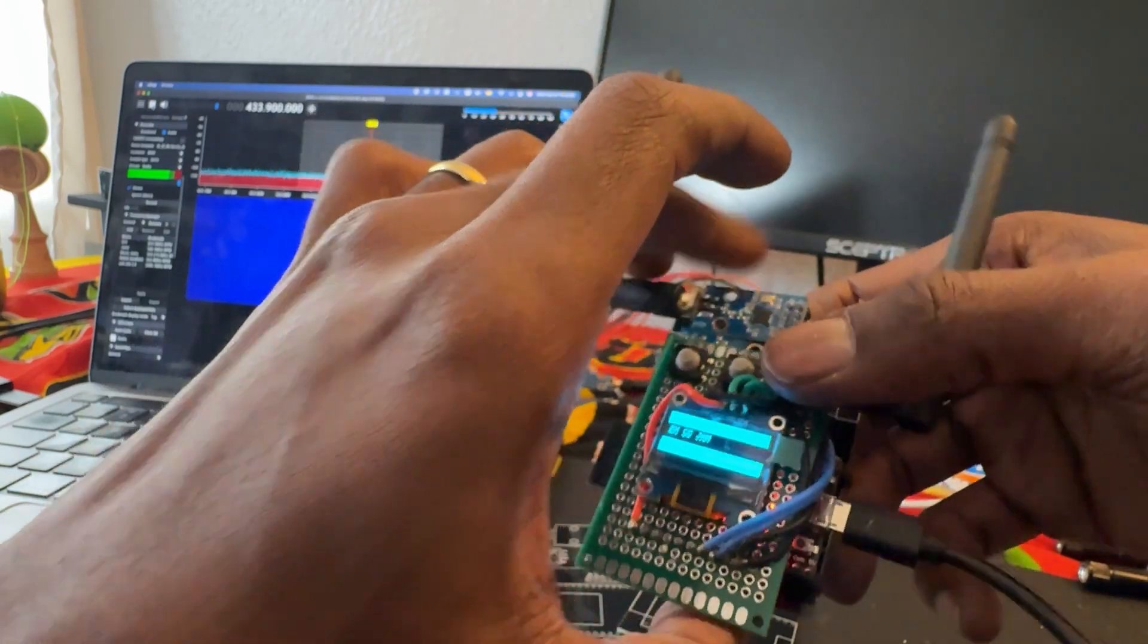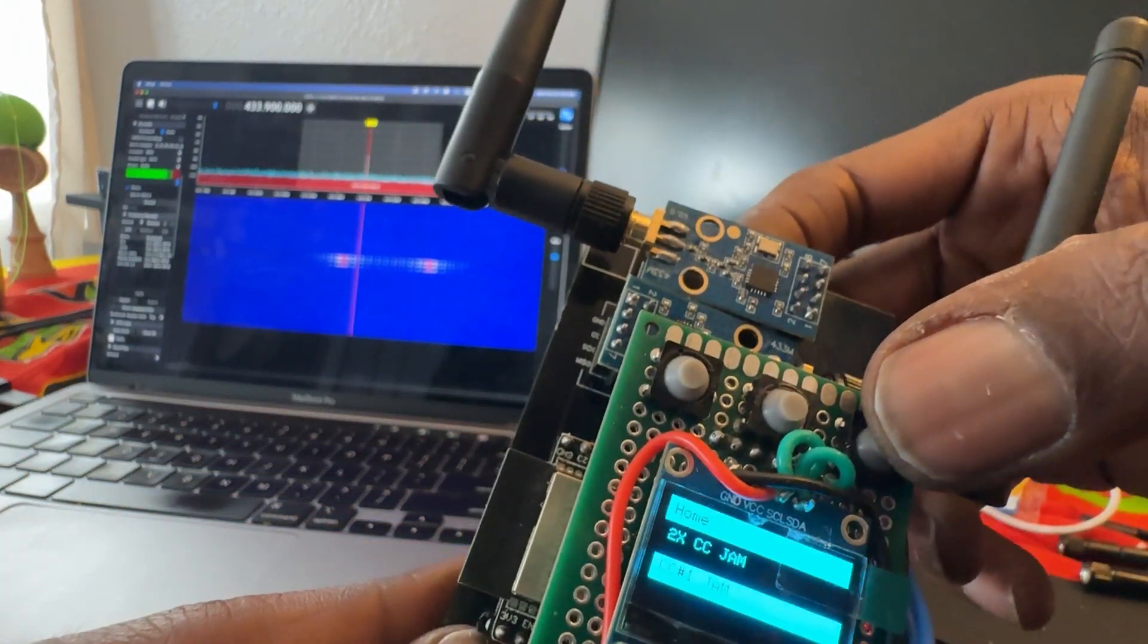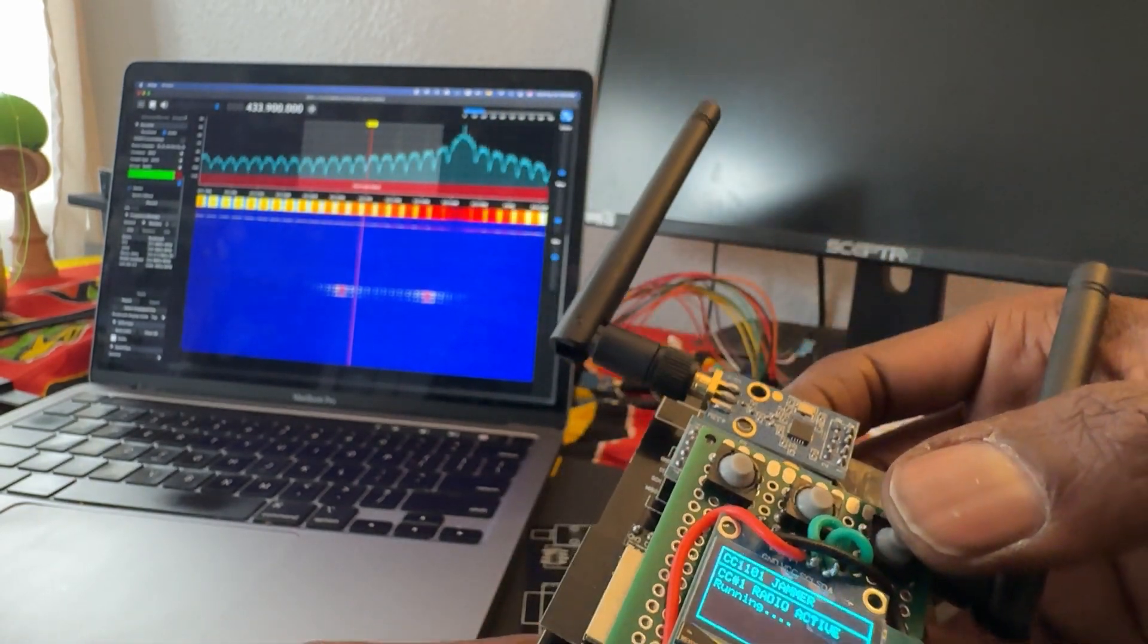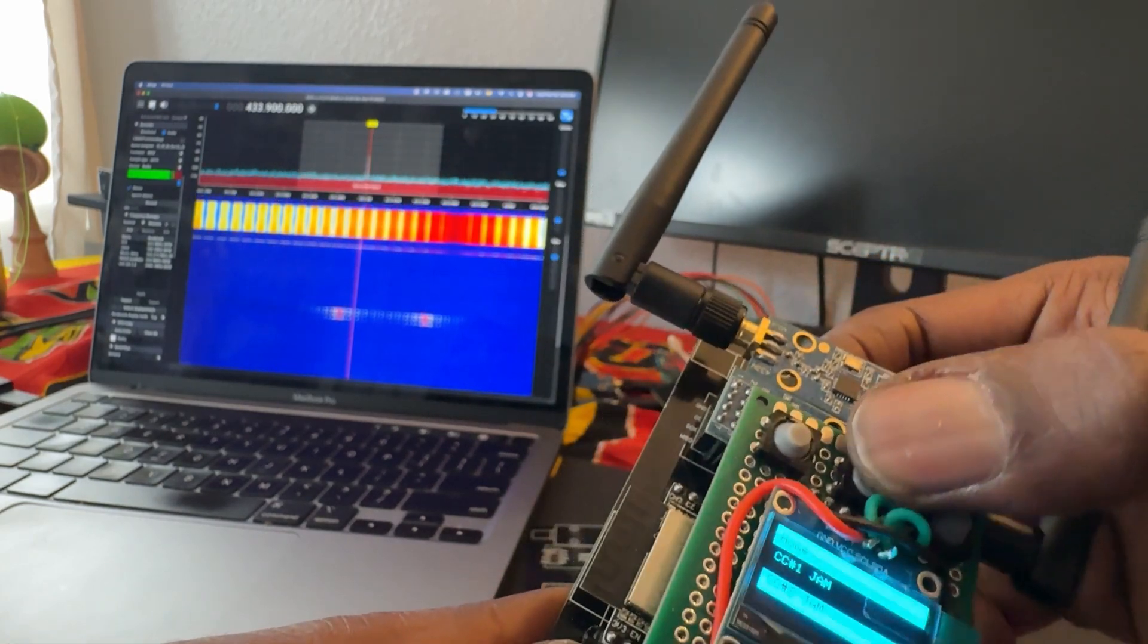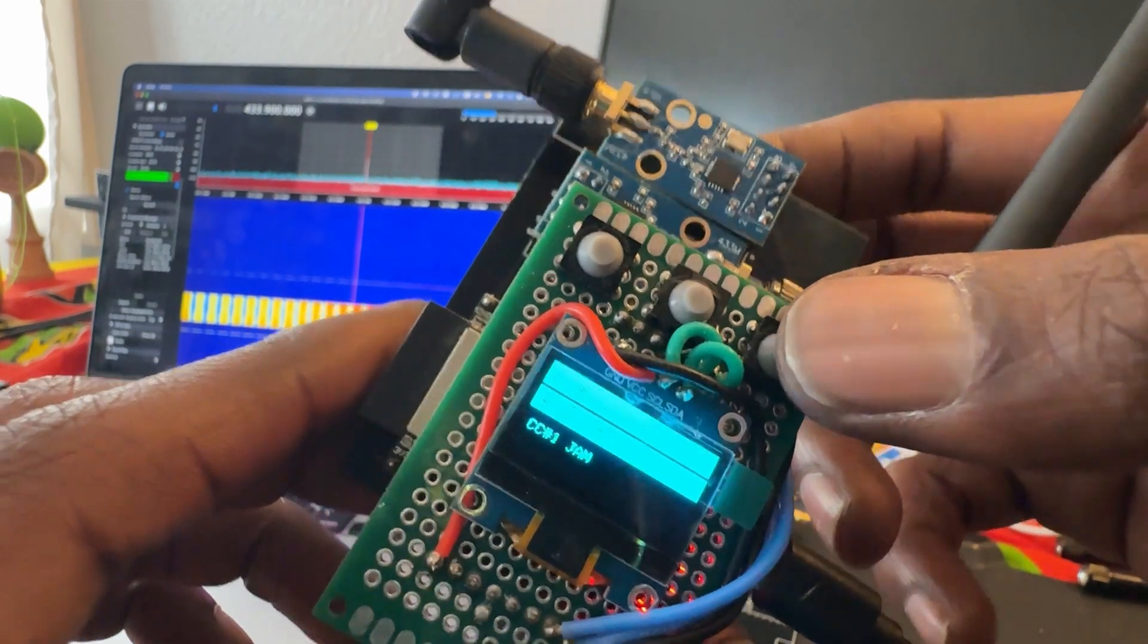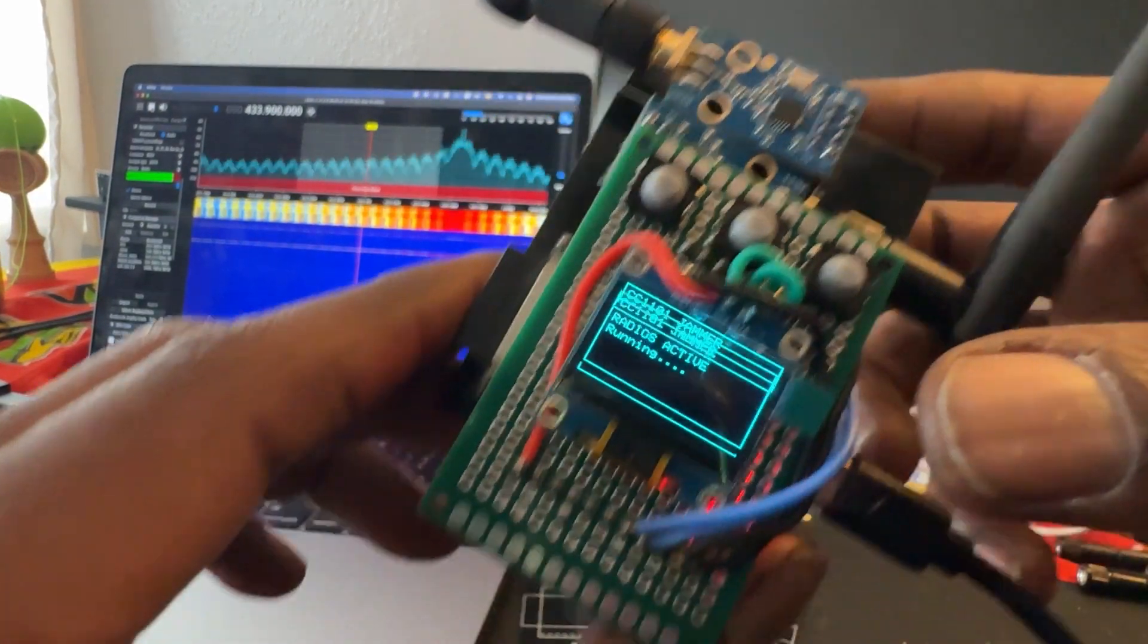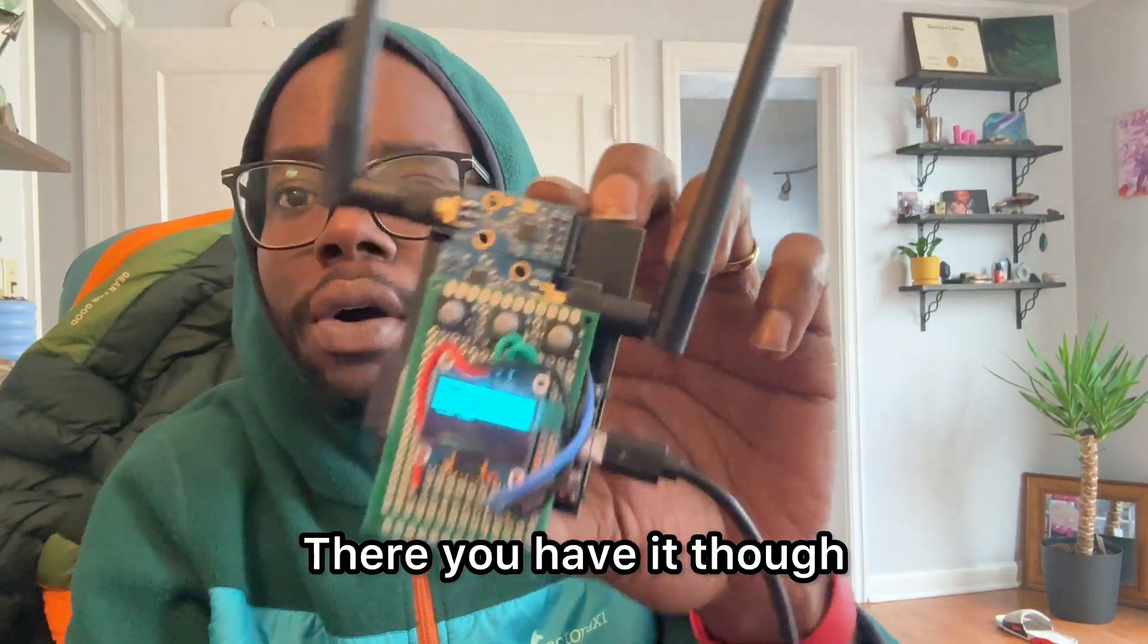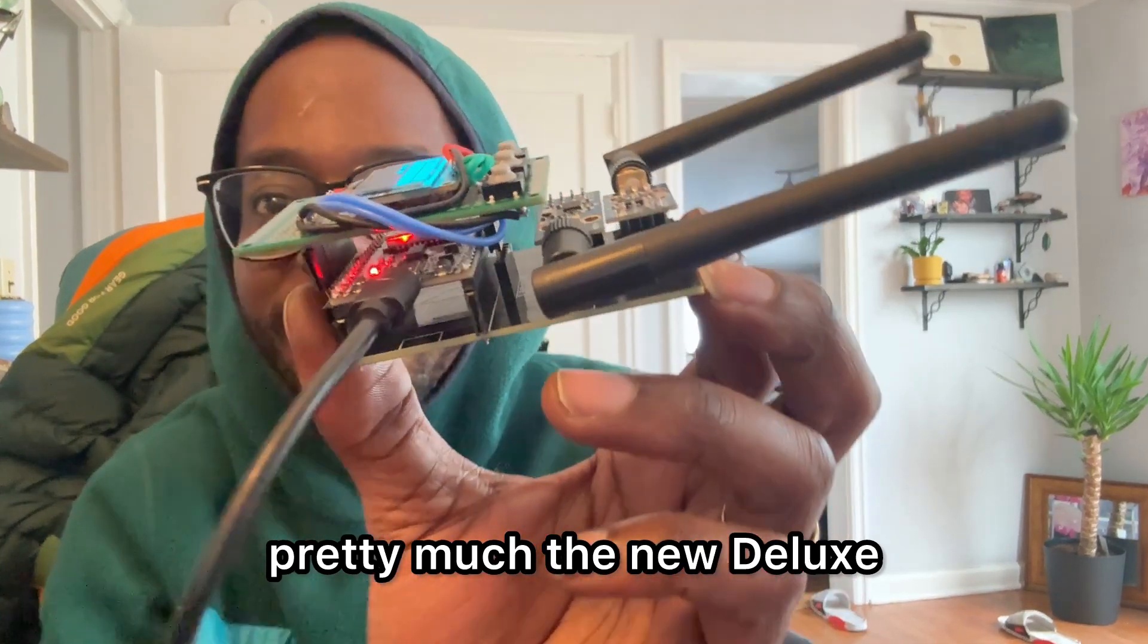Now we'll test jammer, we'll test radio one. Okay, now we'll test both radios. There you have it though, pretty much the new deluxe 433 megahertz jammer in a nutshell.